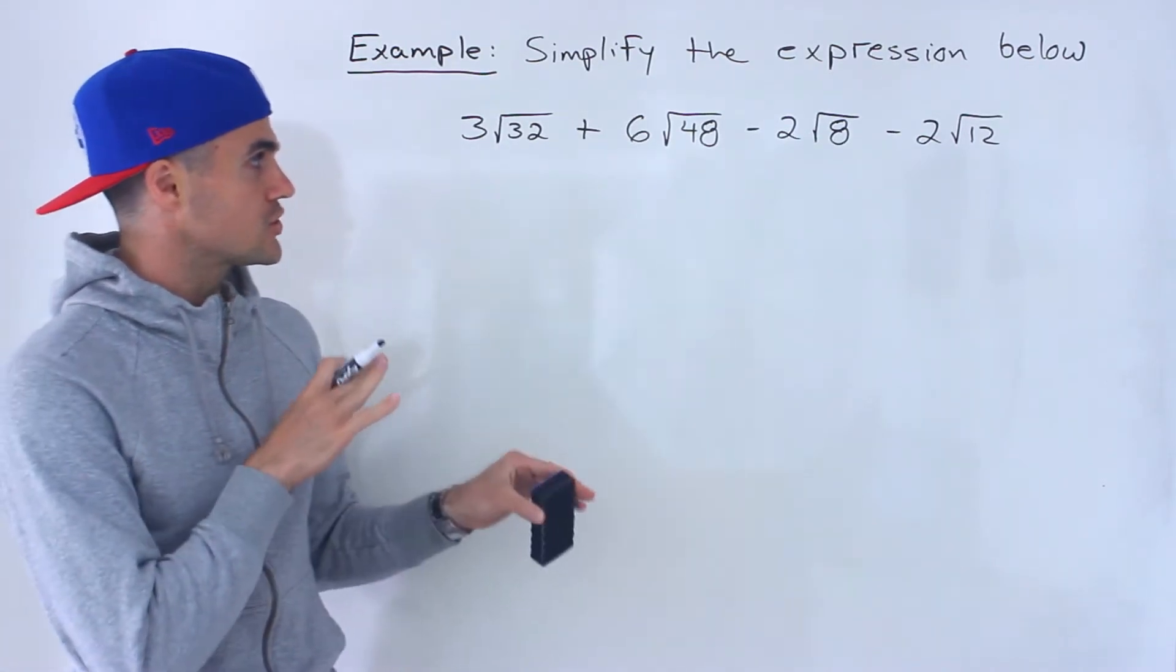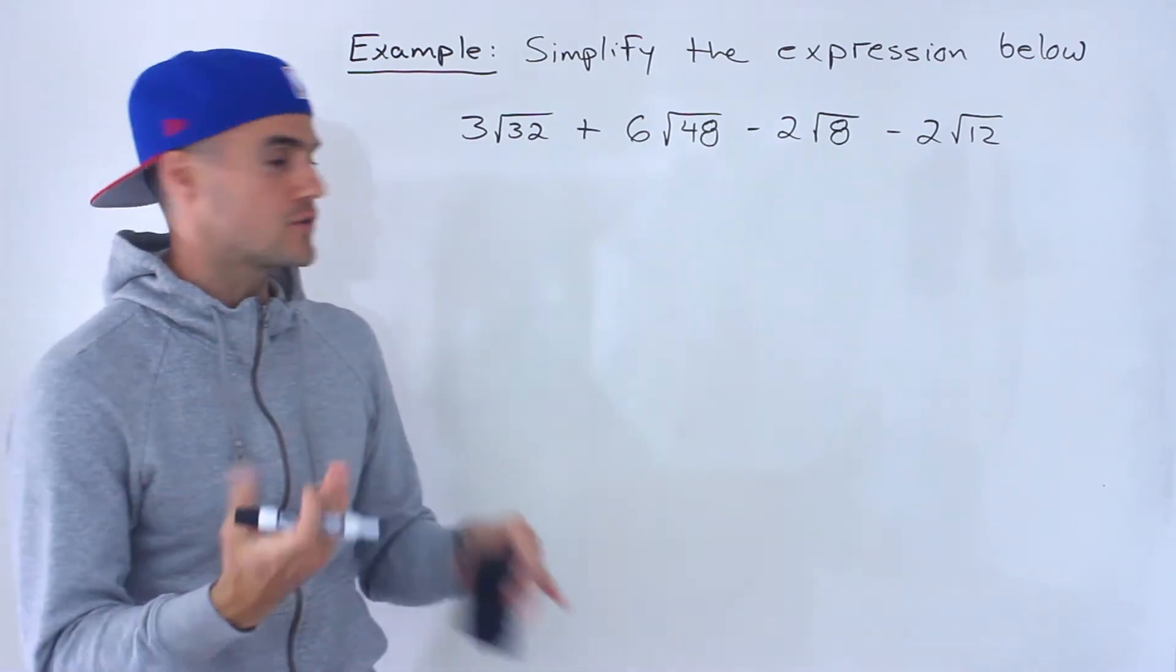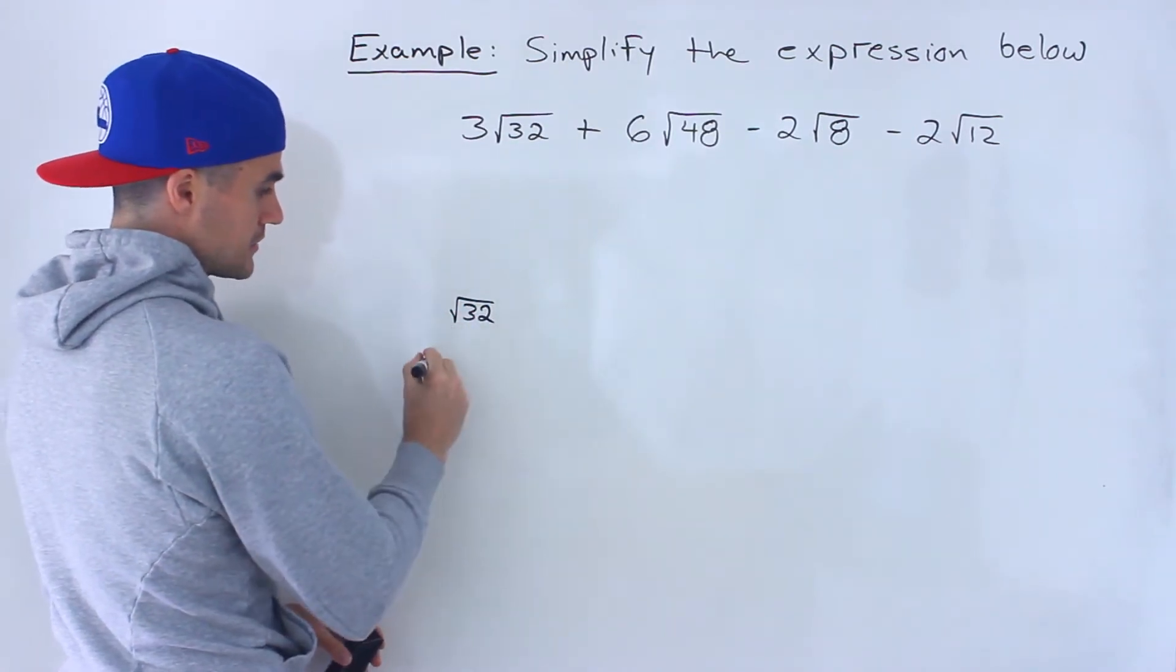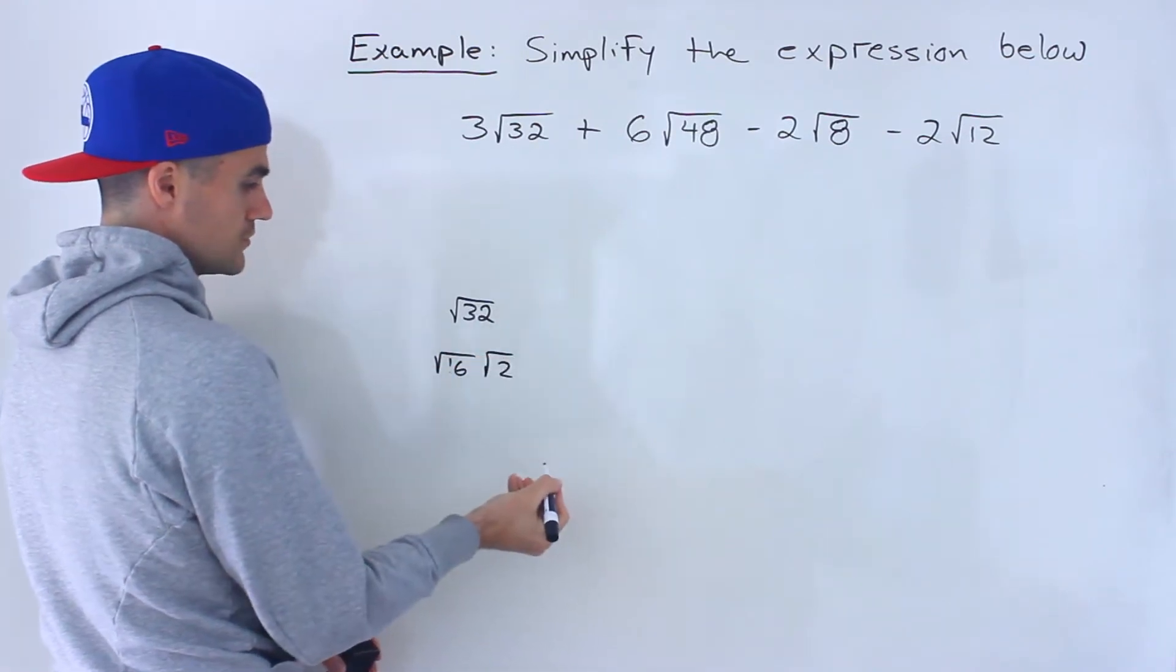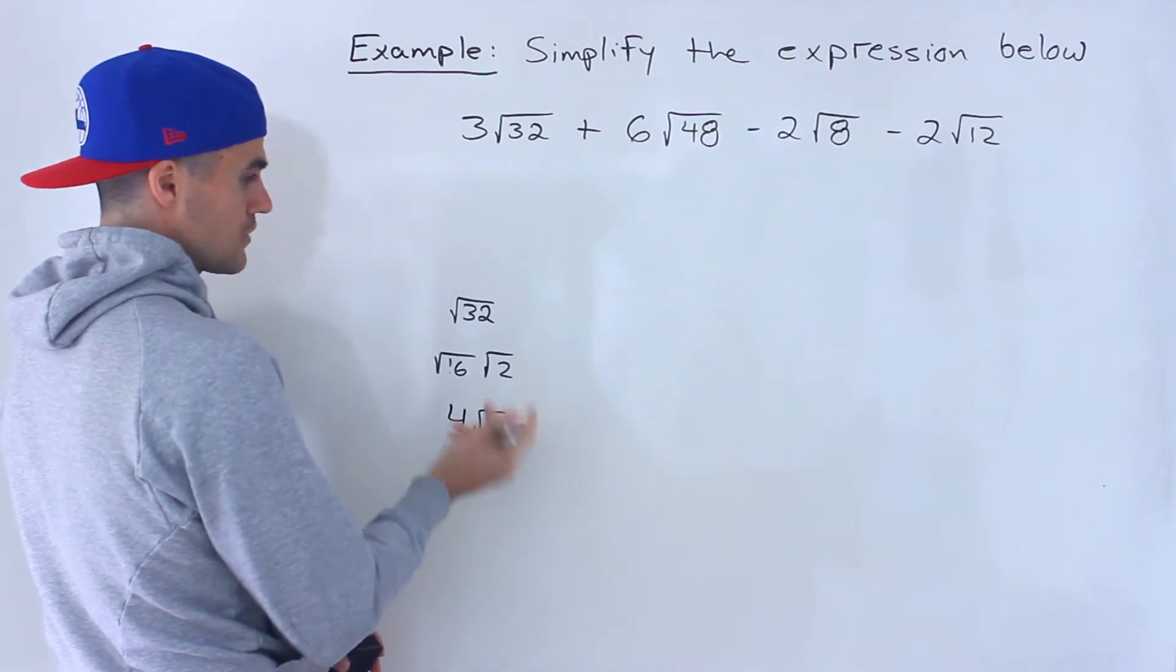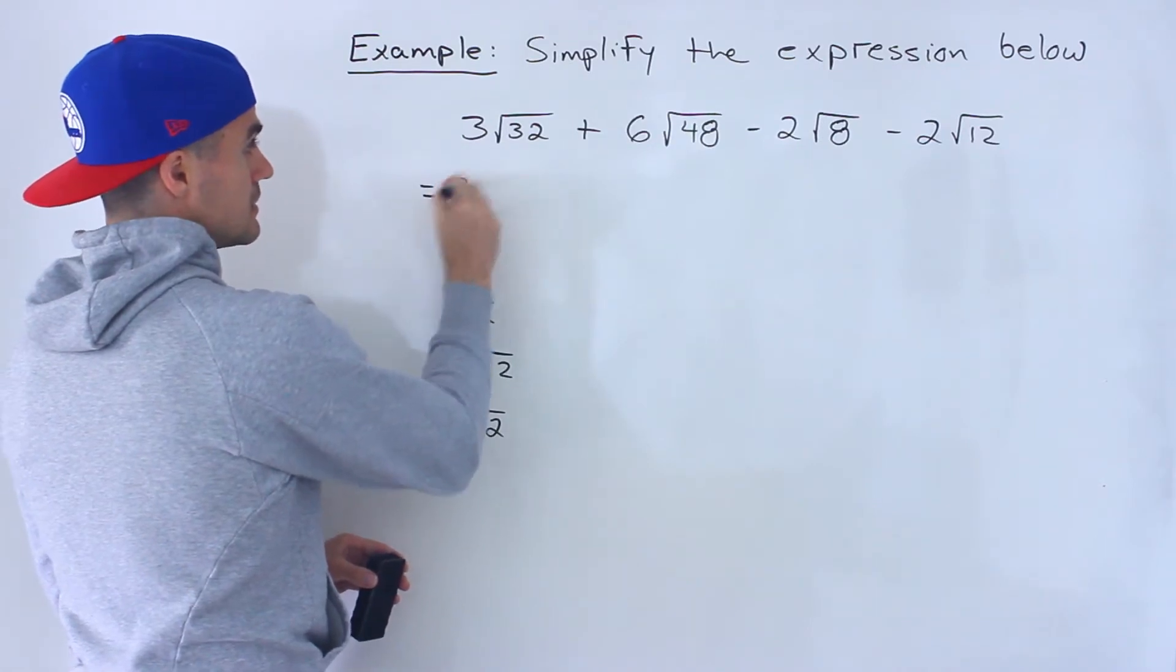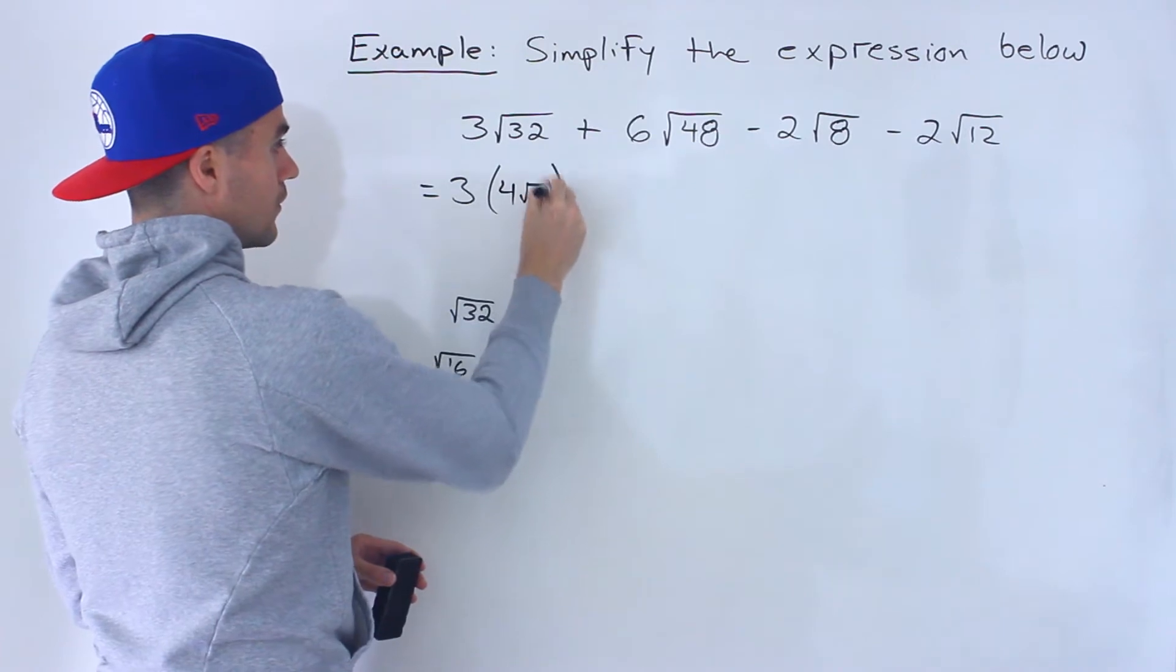So what you want to do with a question like this is first take all the radicals and see if you could simplify them. Notice how root 32 can simplify here. We can split it up into root 16 times root 2. Root 16 would be 4 and then we'd have root 2 there. So root 32 and 4 root 2 are the exact same thing. We could rewrite it as 4 root 2.